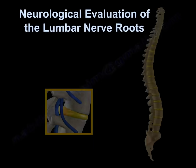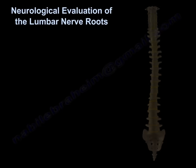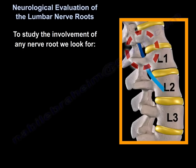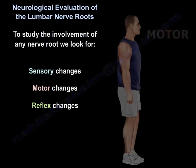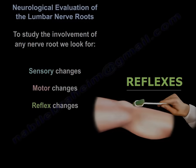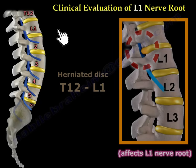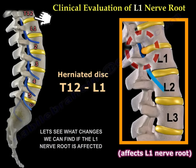Neurological evaluation of the lumbar nerve roots. To study the involvement of any nerve root, we look for sensory changes, motor changes, and reflex changes. If there is a herniated disc between T12 and L1, it will affect the L1 nerve root. Let us see what changes we can find if the L1 nerve root is affected.